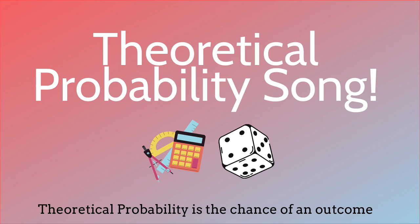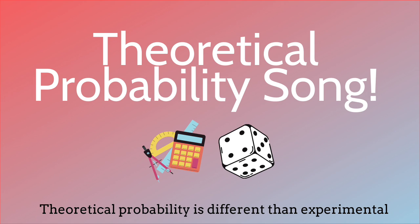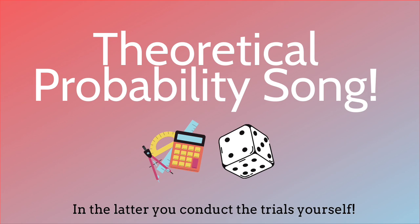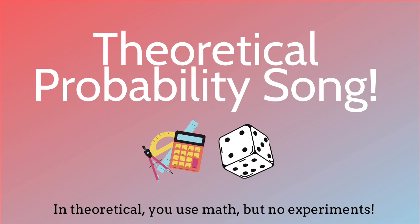Theoretical probability is the chance of an outcome divided by all the possible ones. Theoretical probability is different than experimental. In the latter, you conduct the trials yourself — divide your number of successes by your total. In theoretical, you use math but no experiments.